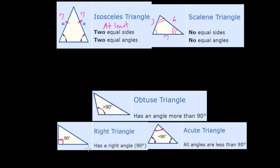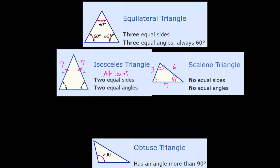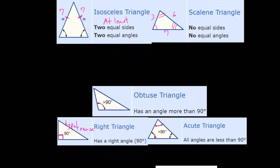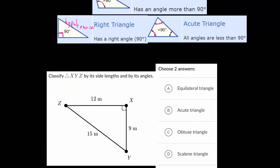In the case of a right triangle, we also have a word for the long side of the triangle. The side length that is opposite the 90-degree angle, we refer to that side as the hypotenuse. So with these different classifications, we want to look at example problems where we're given some triangle and we need to determine whether it's equilateral, isosceles, or scalene, and whether it's obtuse, right, or acute. So let's look at an example problem here.